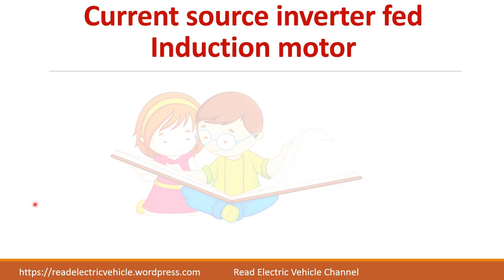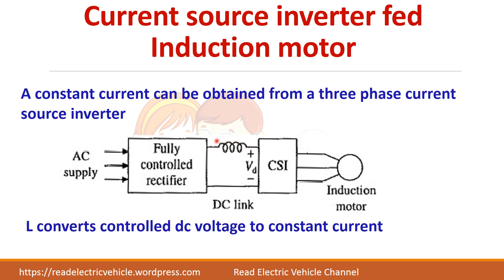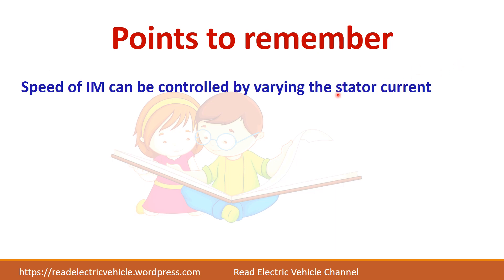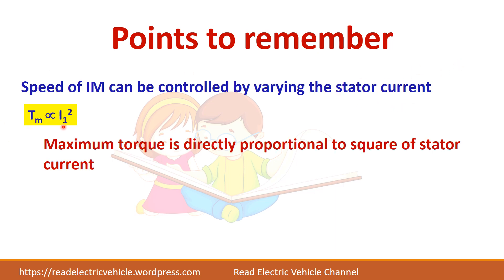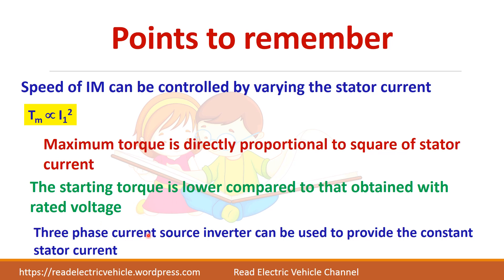To achieve stator current control, we require a constant current source for the stator. This can be achieved using a current source inverter, which provides a constant current. The induction motor is connected to the current source inverter, whose input comes from a fully controlled rectifier. An inductor is connected at the rectifier output to smooth the ripples and provide constant current. The key points are: speed can be controlled by varying stator current; maximum torque is proportional to the square of stator current; starting torque is lower compared to rated voltage control; and a three-phase current source inverter supplies the constant stator current.